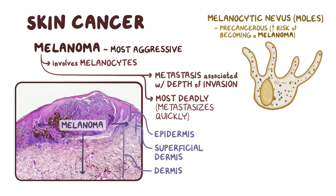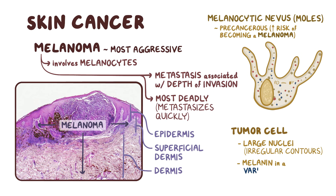Typically, melanoma tumor cells have large nuclei with irregular contours and produce melanin in a variety of colors: brown, red, dark blue, and gray.